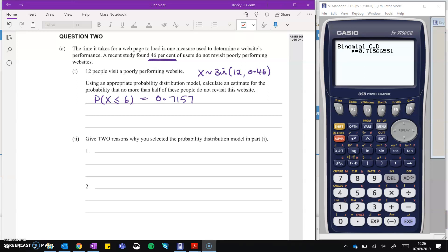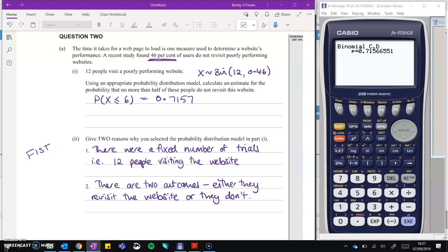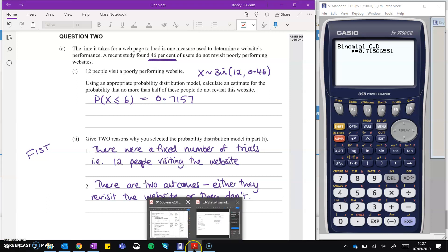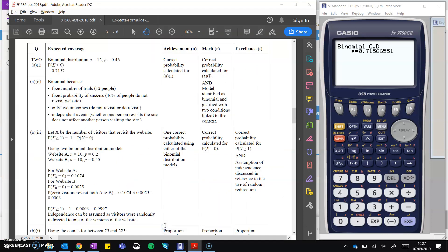Part B is give two reasons why you selected that probability distribution. So why did we pick binomial? And binomial is always all about FIST. So we can say there are a fixed number of trials, and that there were two outcomes that could be termed as success and failure. So here's my write-up of two possibilities. You can probably do more. And we'll take a look at the schedule. There's the correct probability that we've got there.